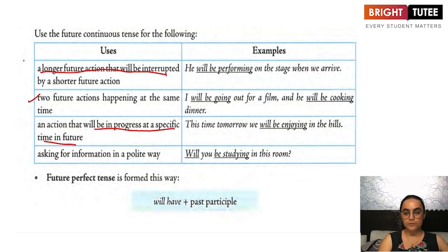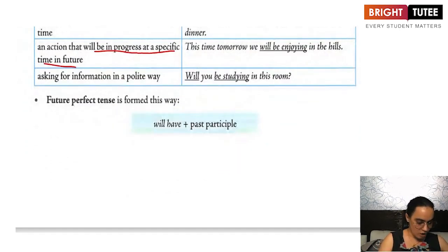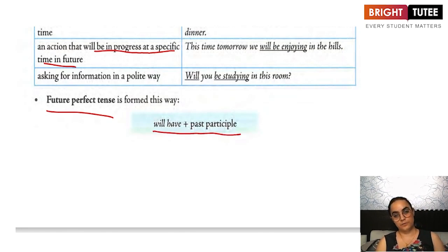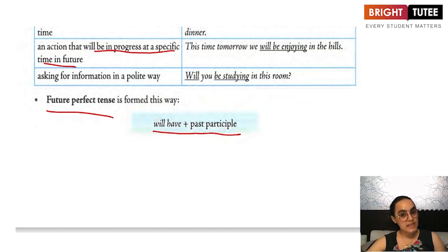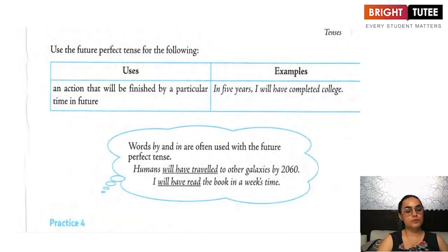The future continuous tense is also used to ask for information in a polite way: will you be needing any help? Will you be studying alone? Will you be helping your mother? Next, we have the future perfect tense. The structure is subject plus 'will have' plus the past participle form of the verb — for example: will have completed, will have slept, will have done, will have found. The future perfect tense is used to talk about an action that will be finished by a particular time in the future.